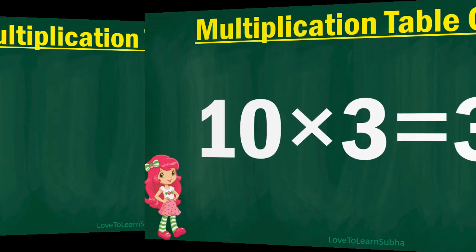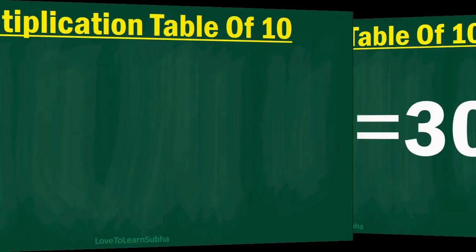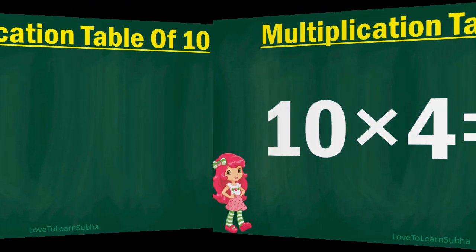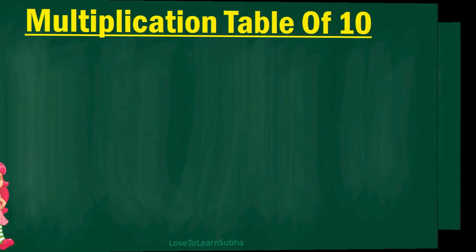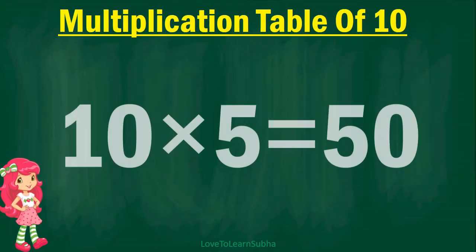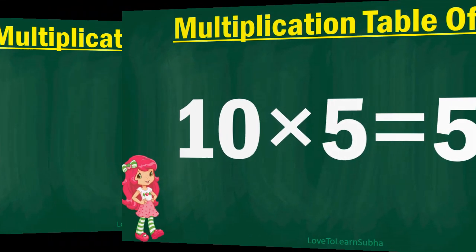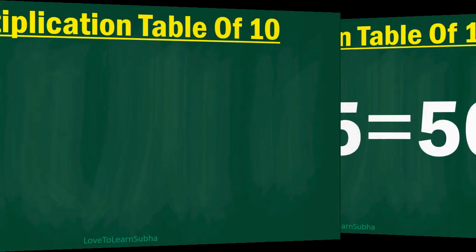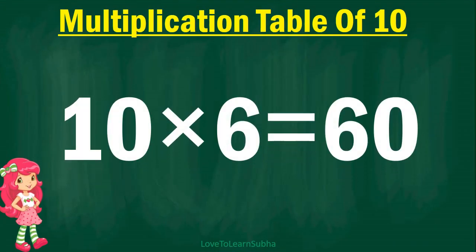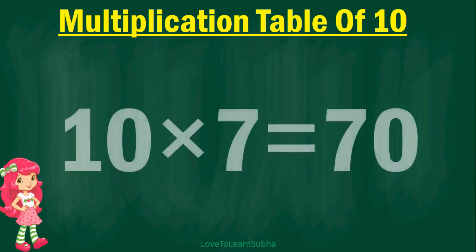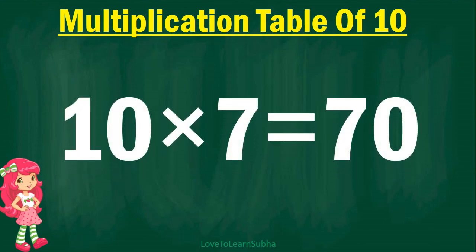10 fours are 40, 10 fives are 50, 10 sixes are 60, 10 sevens are 70,